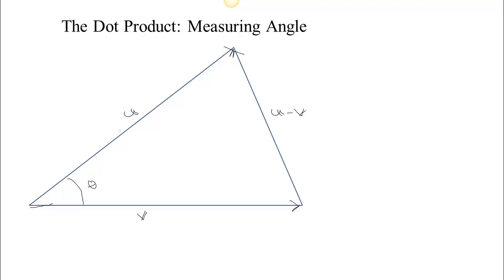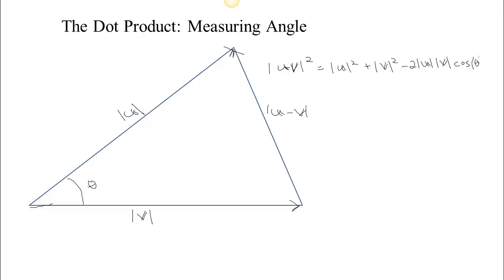We can apply the law of cosines here, because the length of one side is the length of U, the length of another side is the length of V, and the length of the third side is the length of U minus V. So looking at the law of cosines, the length of U minus V squared equals the length of U squared plus the length of V squared minus 2 times the length of U times the length of V times the cosine of the angle in between them.